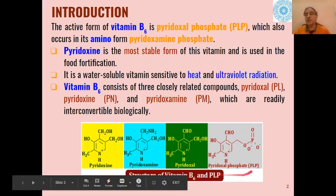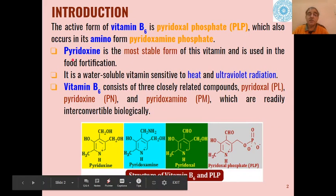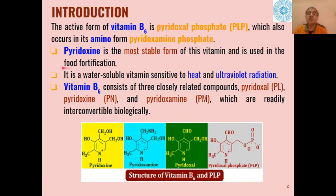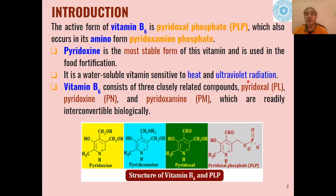This is the most important structure which acts as co-enzyme in different types of reactions. Out of all these forms, pyridoxine is the most stable form of the vitamin and is used in food fortification. This water-soluble vitamin is very sensitive to heat and UV light, so we need to protect it from UV light.